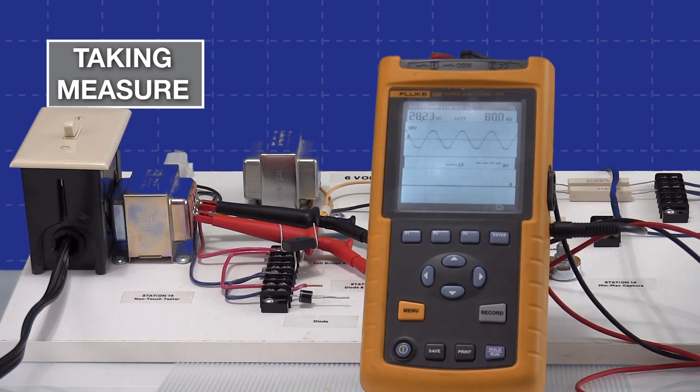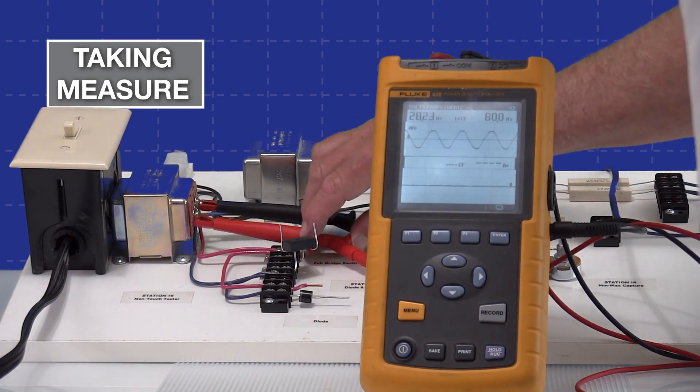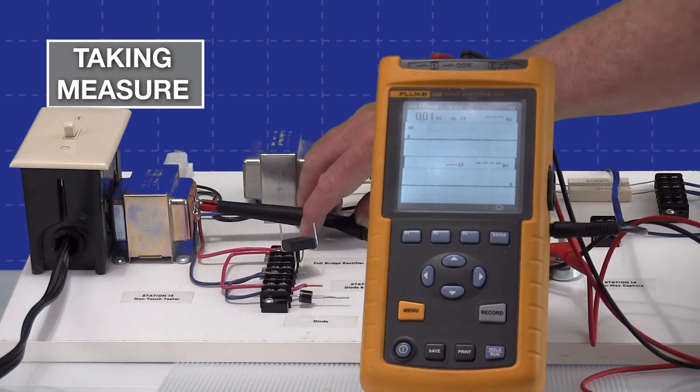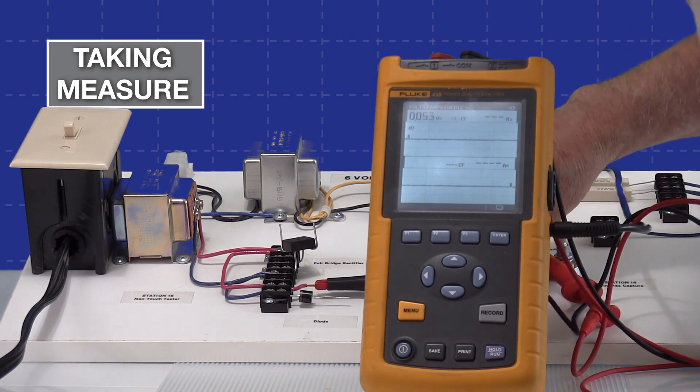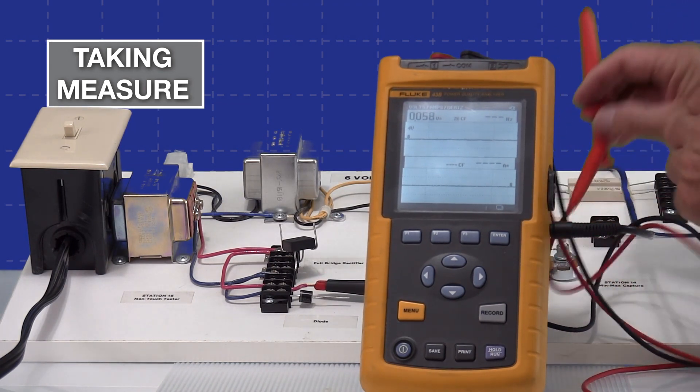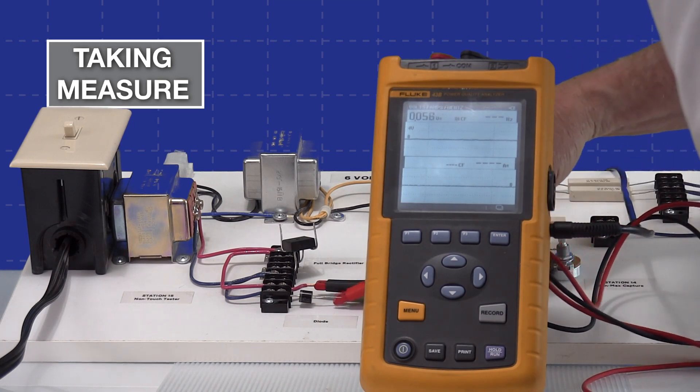And now what I'm going to do is I'll move down and we'll read right off of our diode and see what happens. We should expect to see only half the sine wave and we should see half the voltage also because we're only getting half the sine wave.